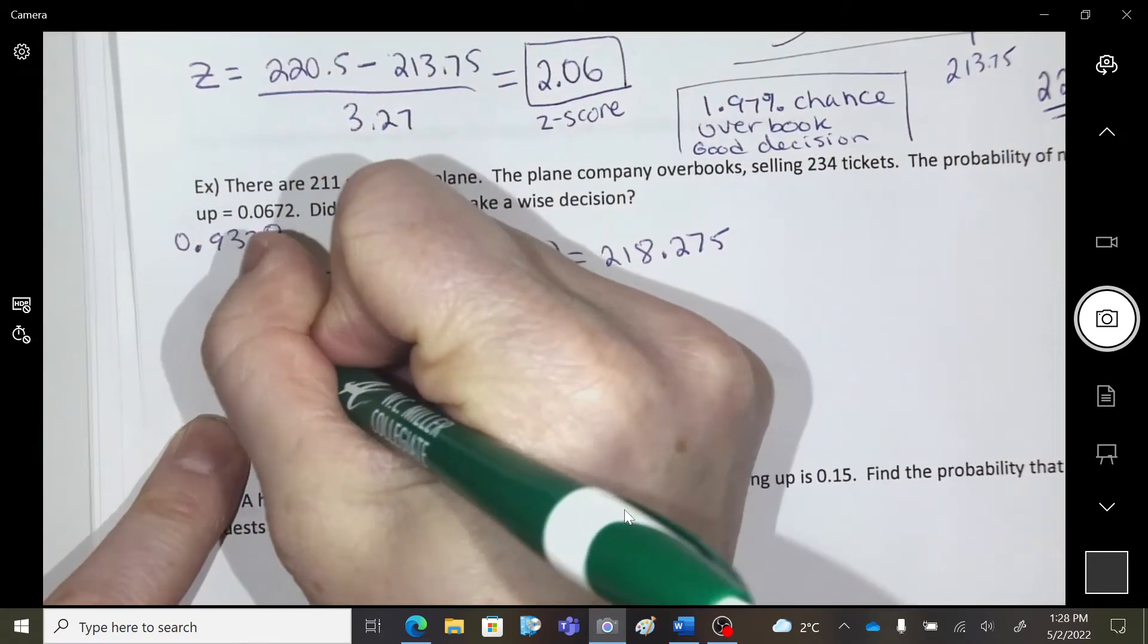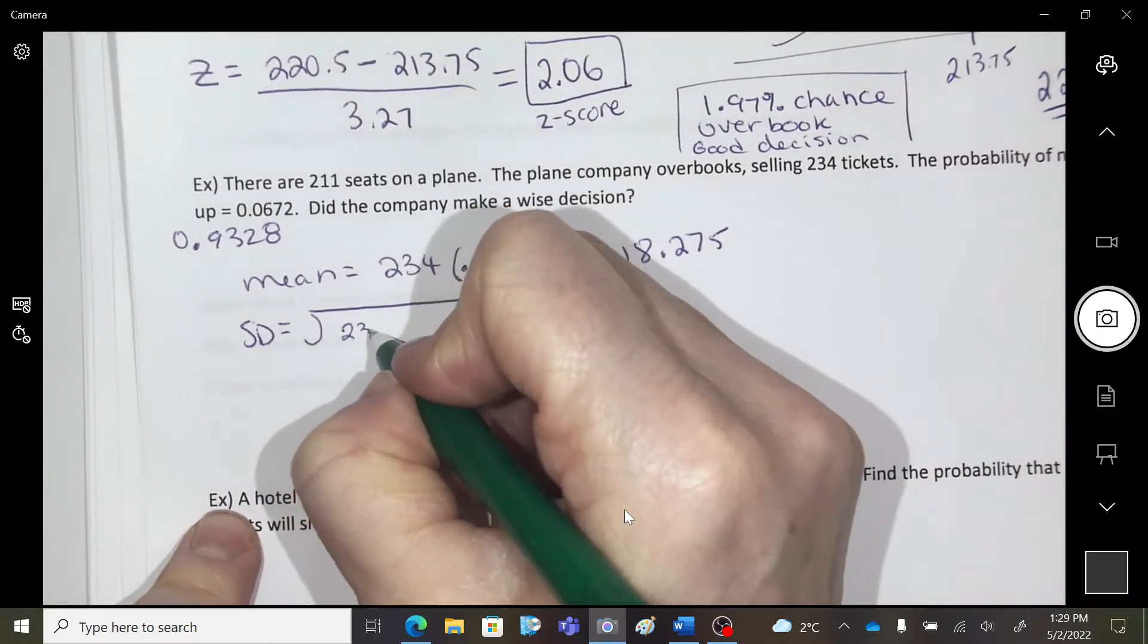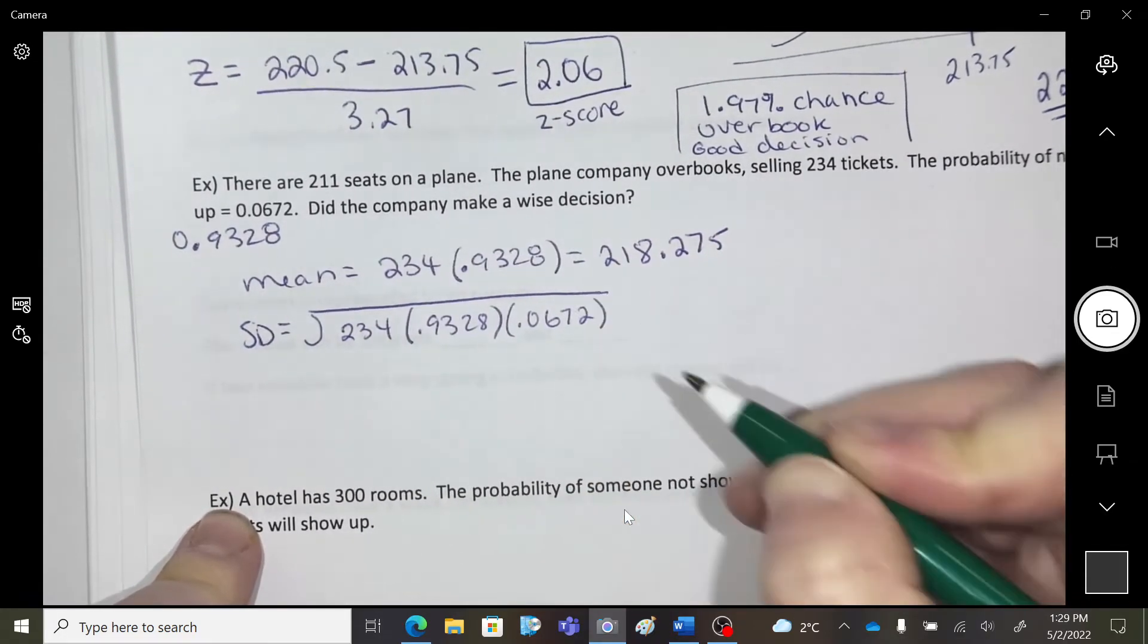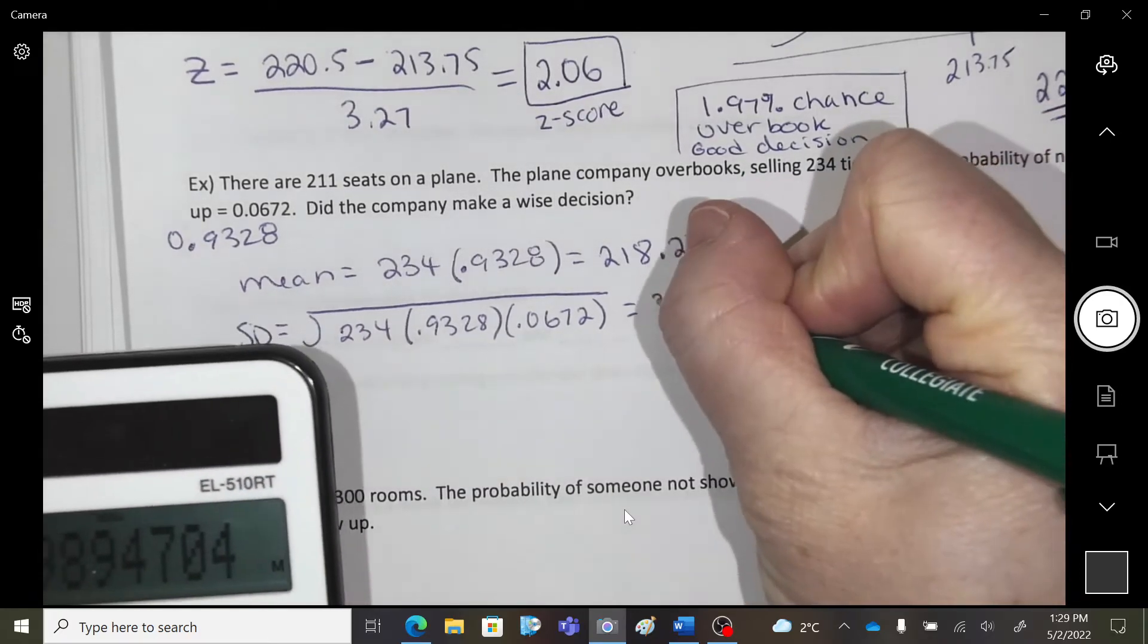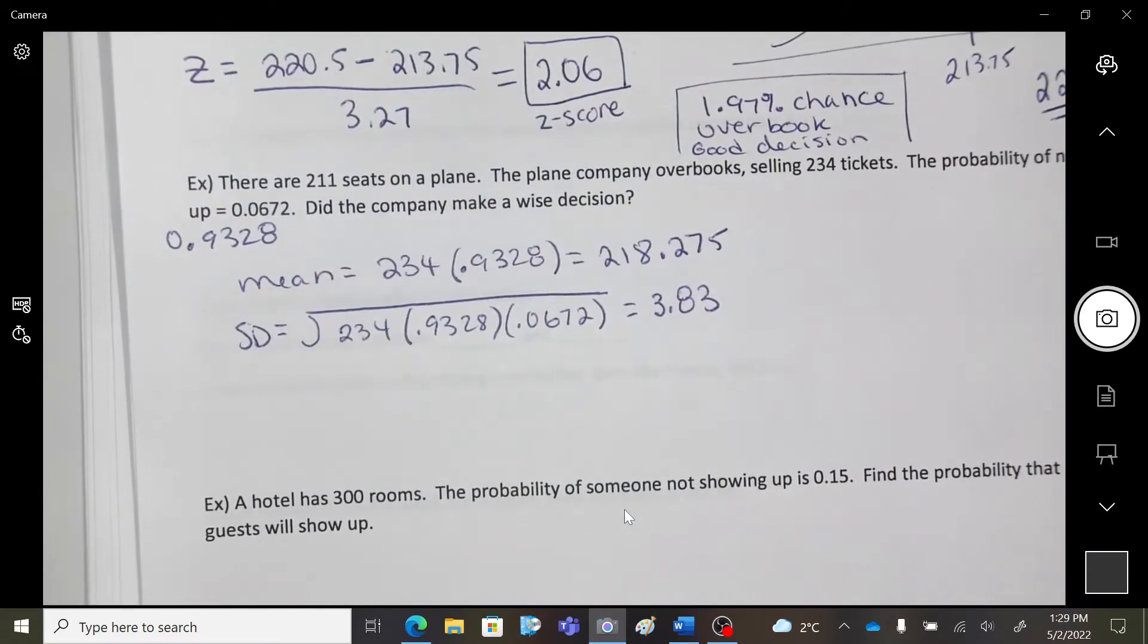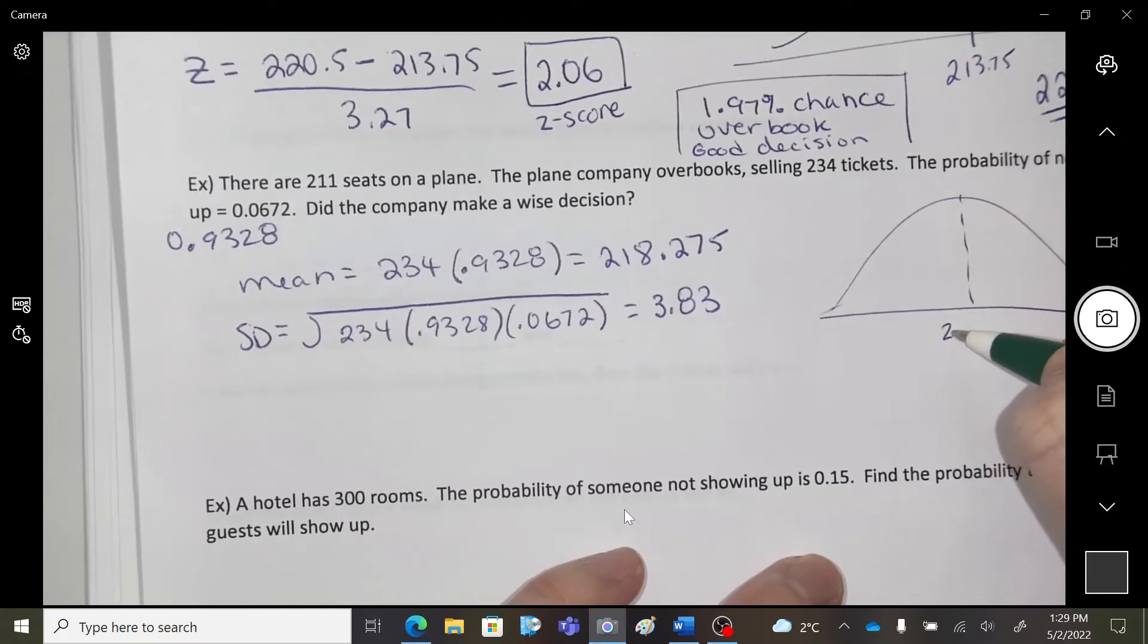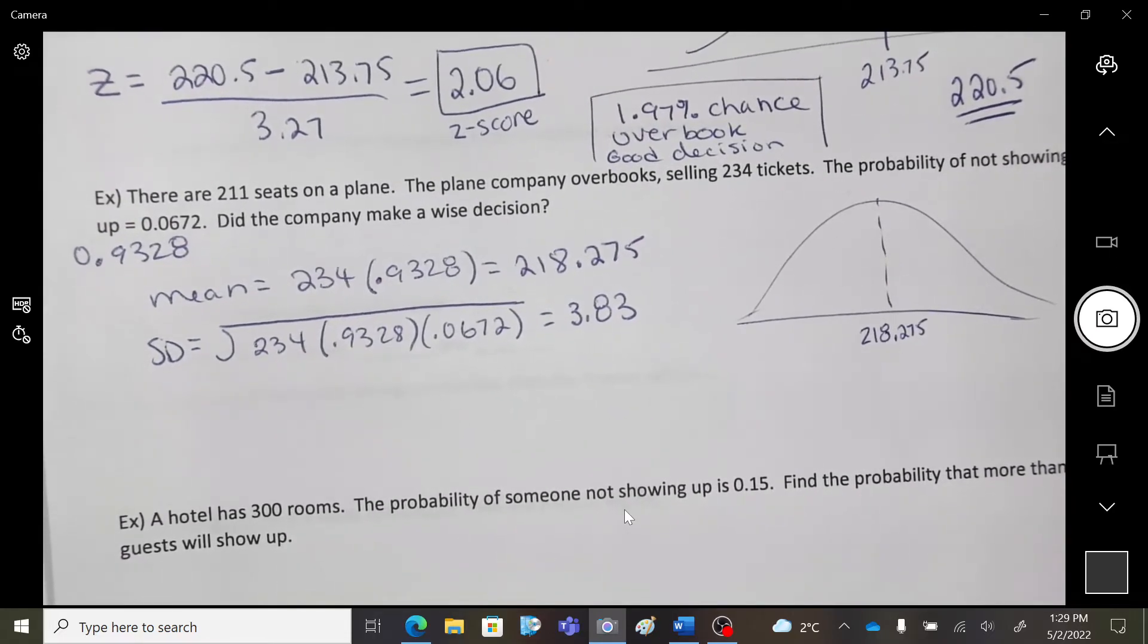Okay, standard deviation is the square root of the number, so 234 times the P times the Q, which is the probability of showing and the probability of not showing. Square root of that. So, I'm getting a 3.83.